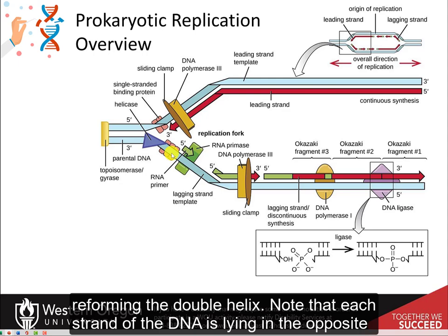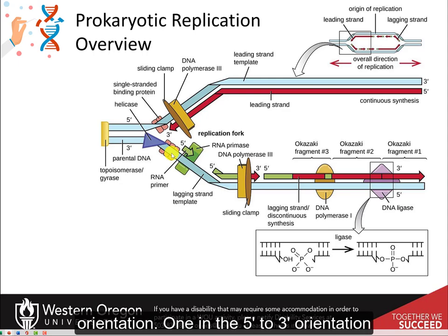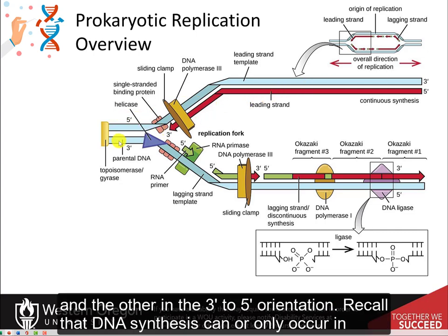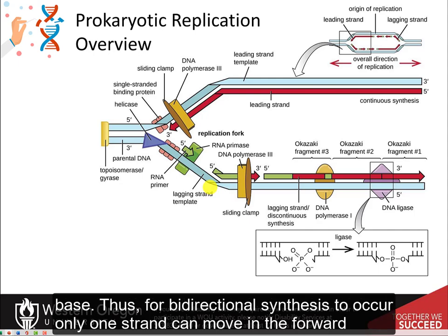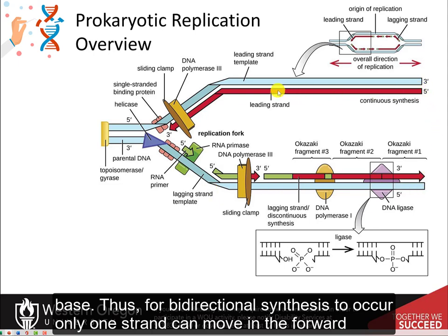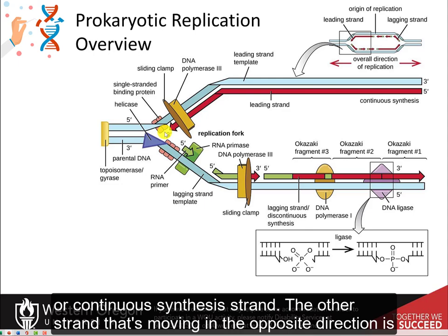Note that each strand of the DNA is lying in the opposite orientation, one in the 5' to 3' orientation, and the other in the 3' to 5' orientation. Recall that DNA synthesis can only occur in the 5' to 3' direction, with the insertion of new nucleotides at the 3' hydroxyl of the previous base. Thus, for bidirectional synthesis to occur, only one strand can move in the forward direction — the one that will be growing in the 5' to 3' direction. This is called the leading strand, or continuous synthesis strand.